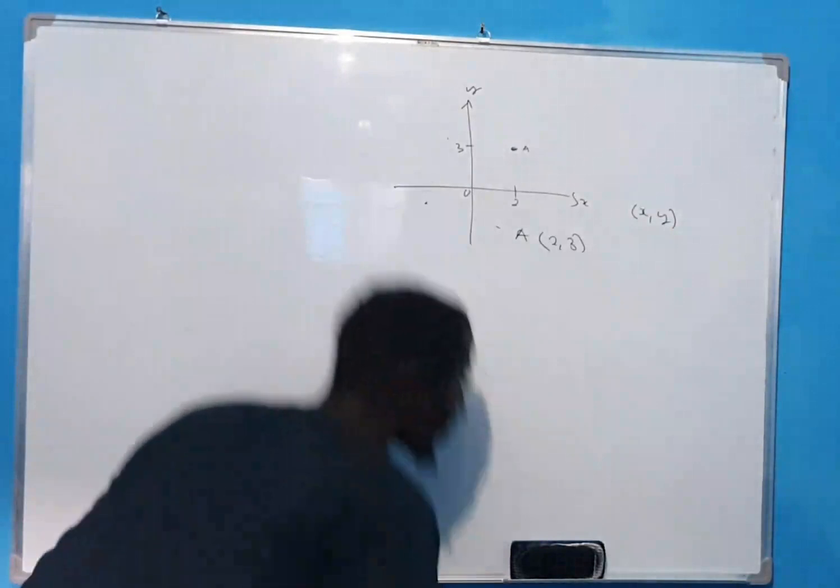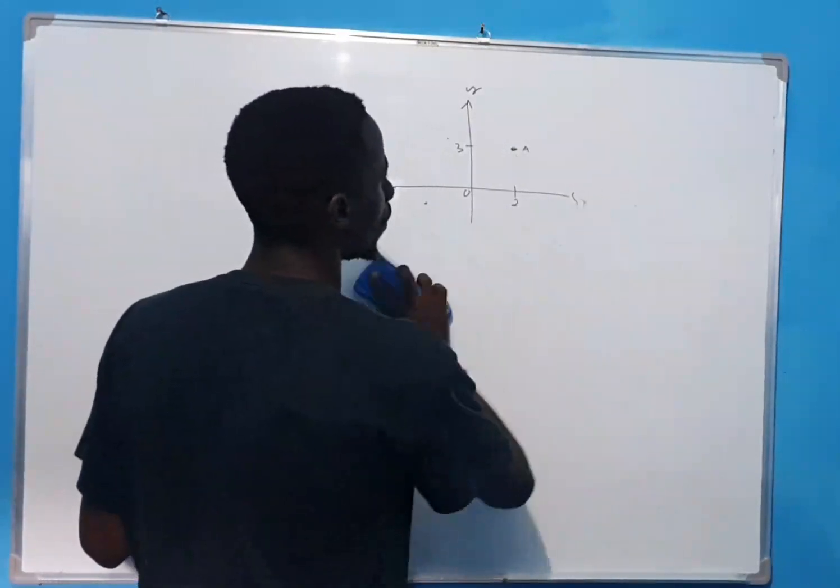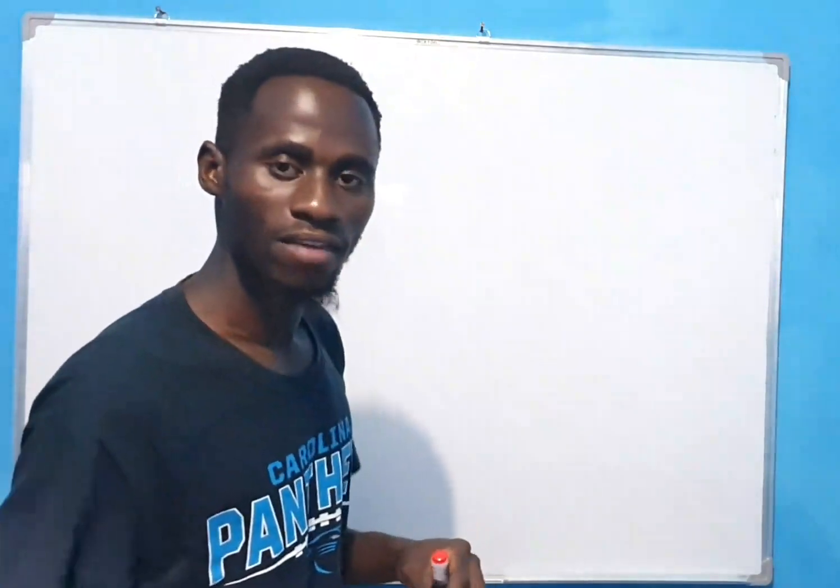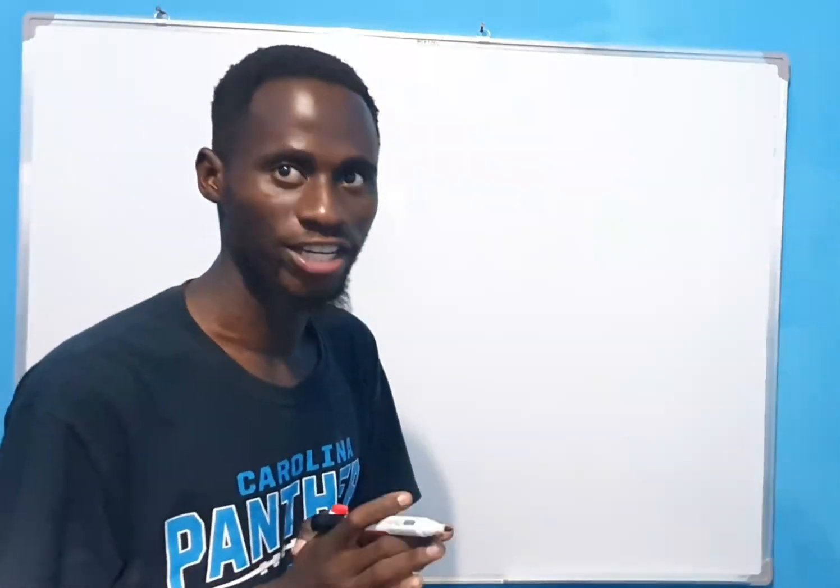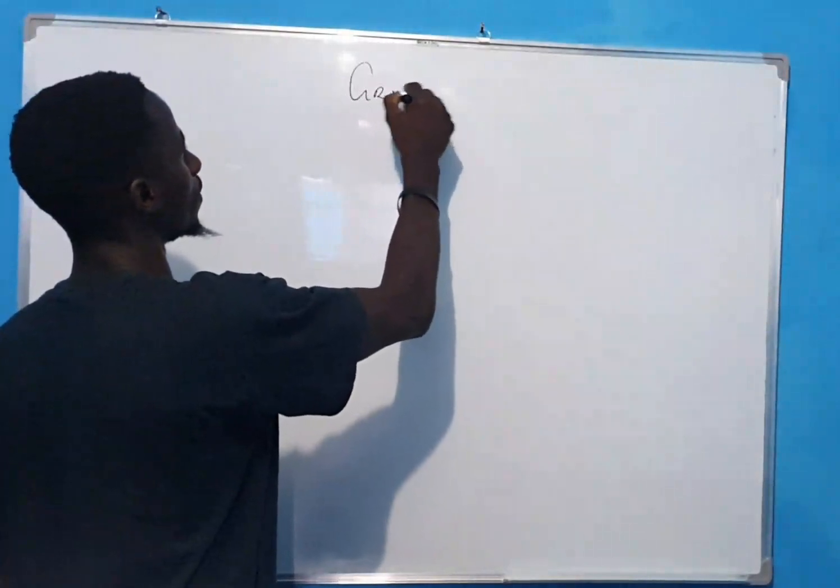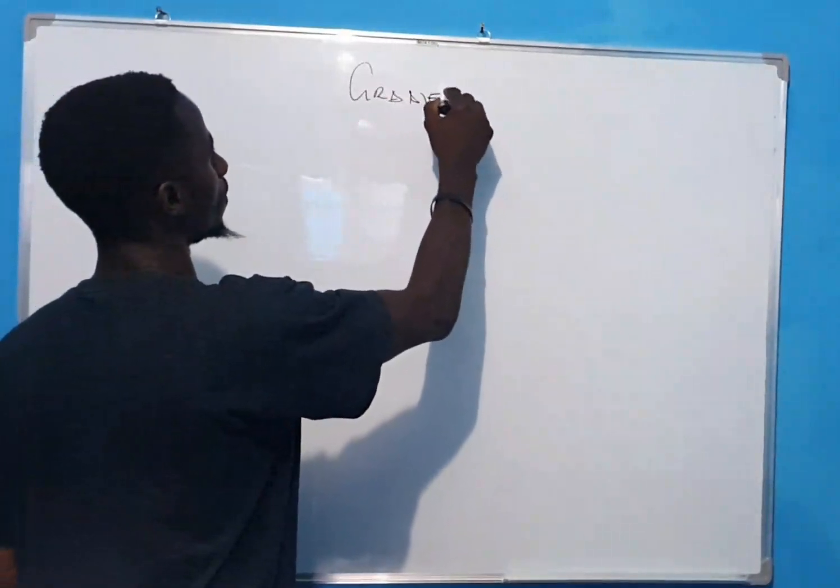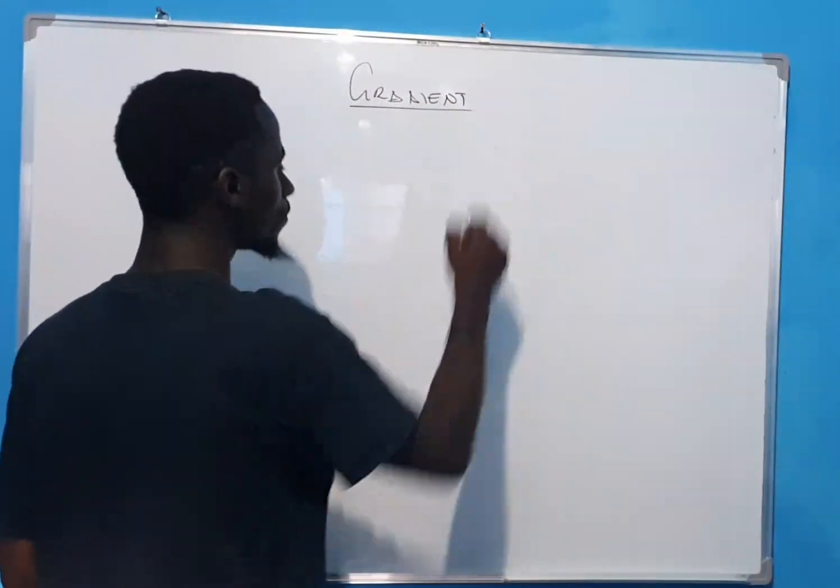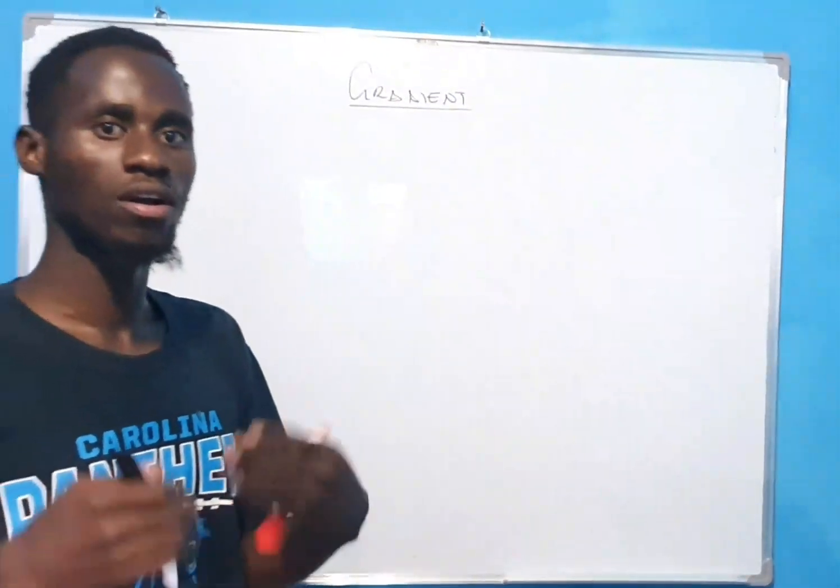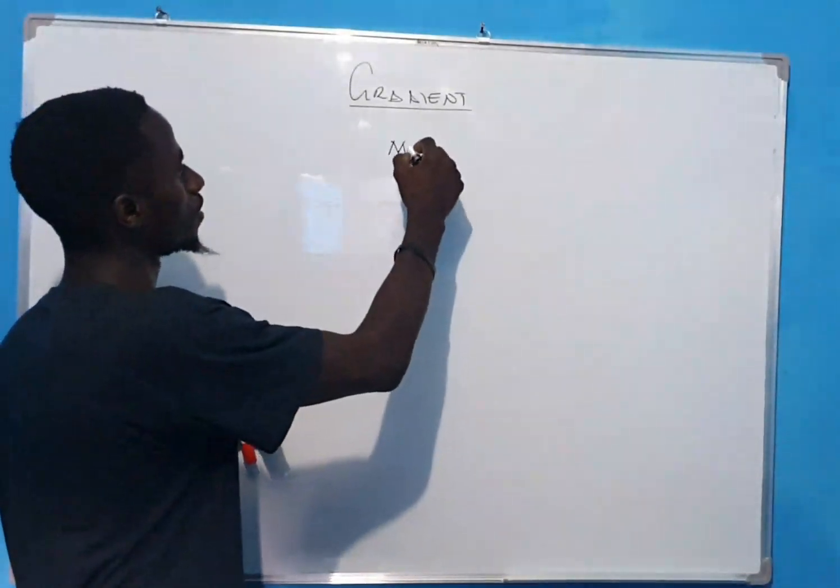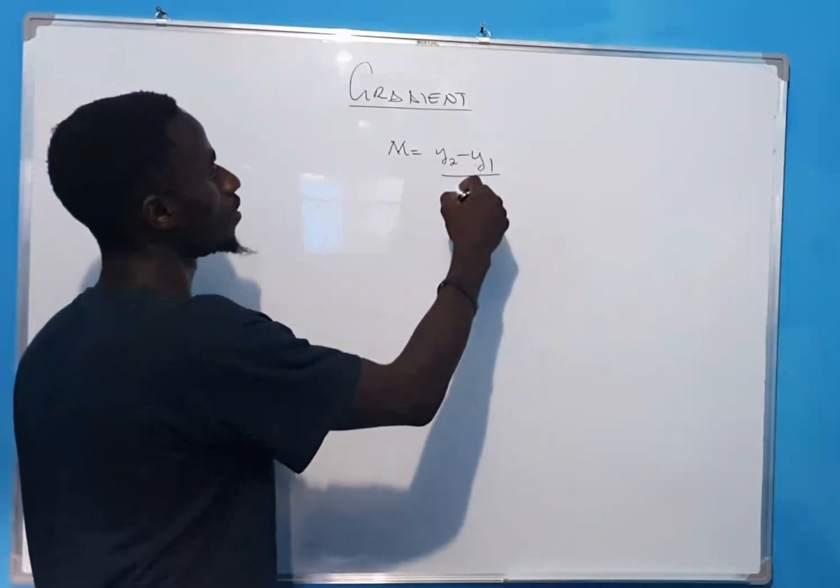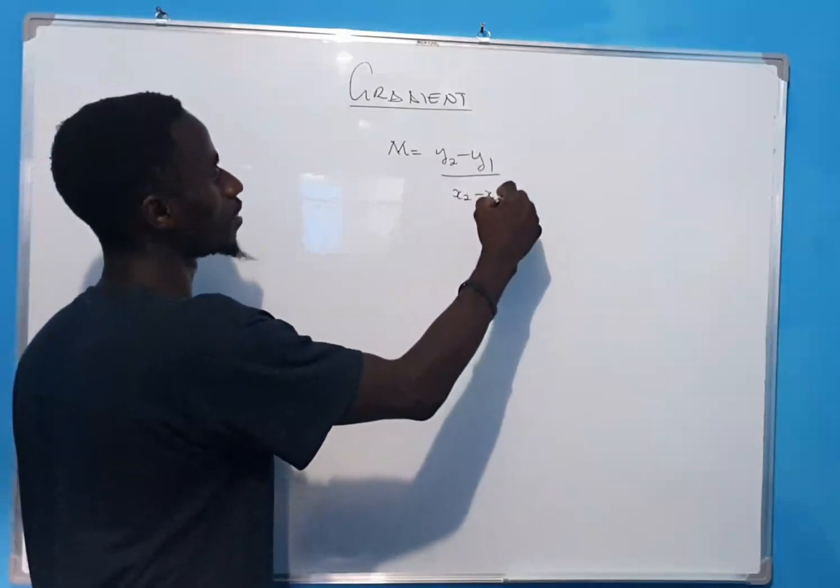Now, the first thing that you look at in coordinate geometry is the gradient. What is gradient? Gradient is just the slope of a line or the curve. Gradient equals y2 minus y1 over x2 minus x1.